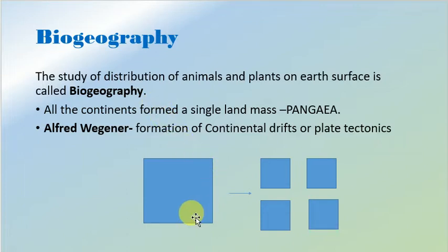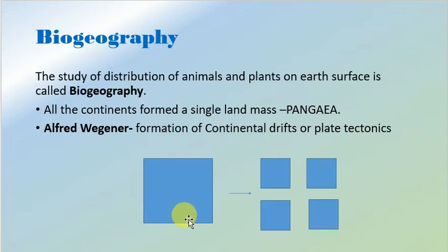When the earth was formed, it is believed that it was not divided into the continents. It was a single unit of the landmass and it was given the name Pangaea. Later on, this single unit of the landmass was divided into multiple subunits, and all those subunits were given the name continents. The process of the formation of the continental drift, or plate tectonics, was described by Alfred Wegener. Due to this kind of formation of different biogeographical areas, we can have certain evidences which can be helpful in understanding the process of evolution.